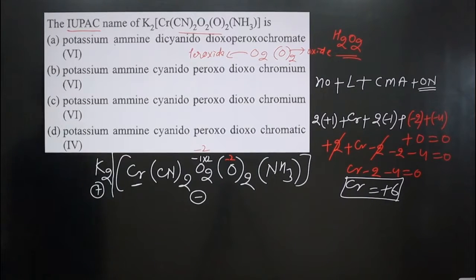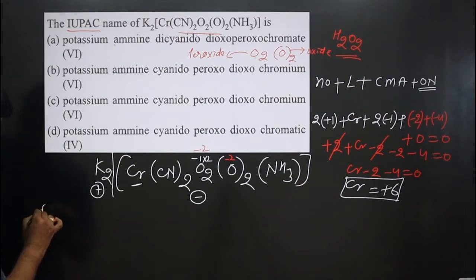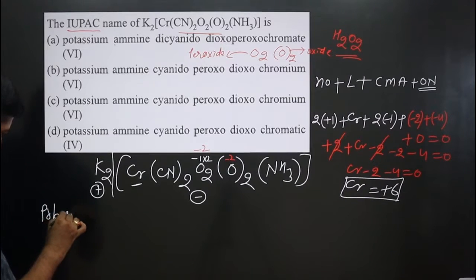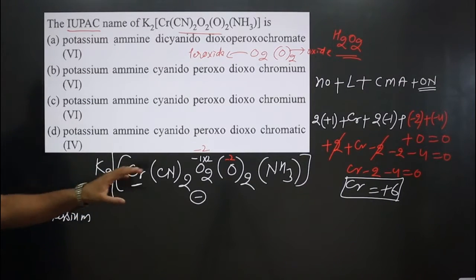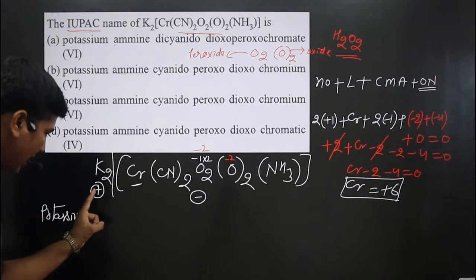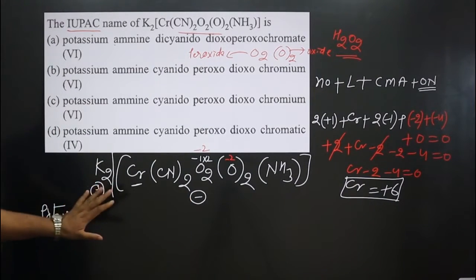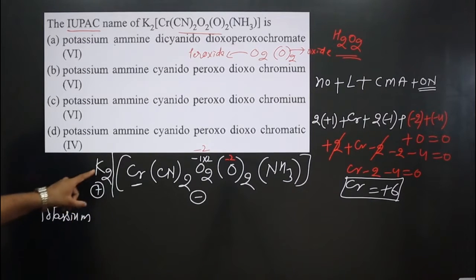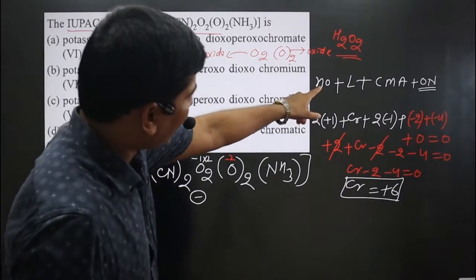Now let's name the complex. The counter ion is potassium. We do not write 'dipotassium' because the two comes from balancing the charge between the cationic and anionic parts — we only write the name 'potassium' and do not focus on the number of counter ions.